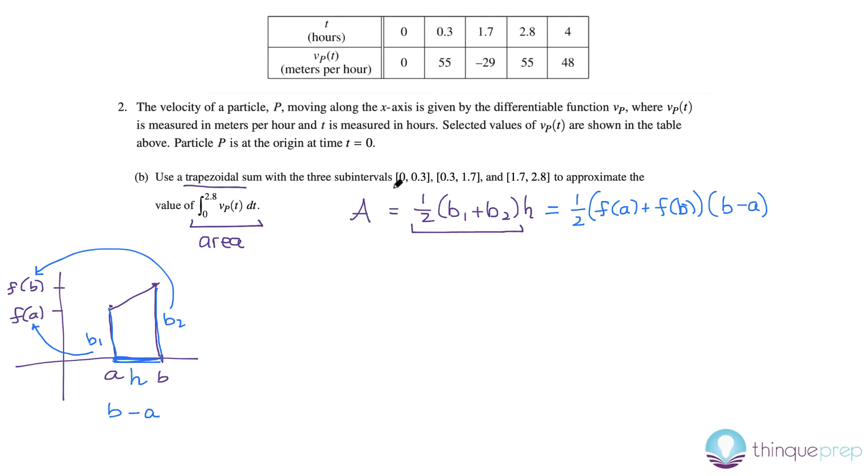So, let's go ahead and do that with our three subintervals. Our first subinterval goes from 0 to 0.3. So, the difference between our two x's would be 0.3. This would be my f(a), and this would be my f(b). So, this first area can be written as 1/2(0 + 55) times 0.3. And then we can do that for our second interval. This difference is 1.4. Now, this is my new base one. This is my base two. So, I'm going to plus 1/2(55 + (-29)) and then times it by 1.4. One more time with this subinterval. This has a difference of 1.1. Let's use this as our base one. This is our base two. And then, so it would be 1/2((-29) + 55) times 1.1.